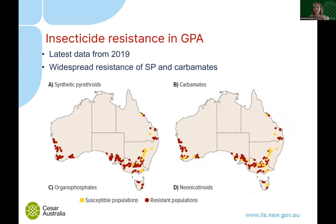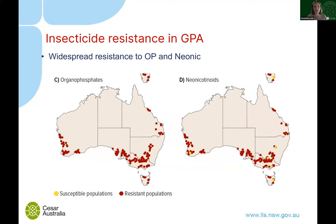Getting back to green peach aphid — this is one of the really key areas where identification is important. If you spray the wrong insecticide, it may have no effect if resistance is present, and you may actually make resistance worse. Looking at 2019 data, there's quite widespread resistance to synthetic pyrethroids and carbamates, with resistant populations especially in northern Victoria and central New South Wales. Similar resistance exists for organophosphates and neonicotinoids in southwestern and southeastern Australia.